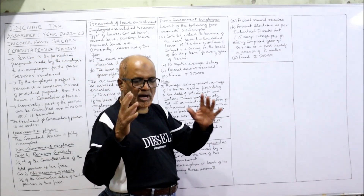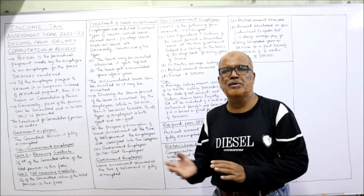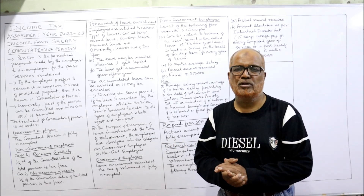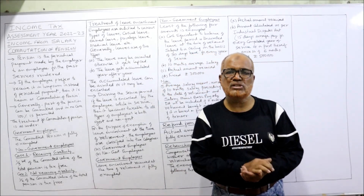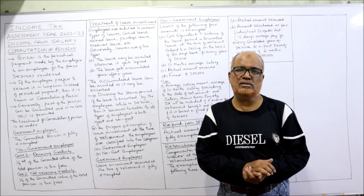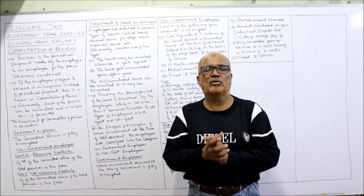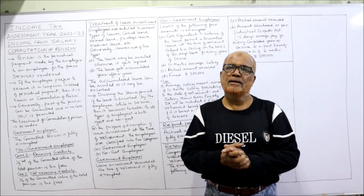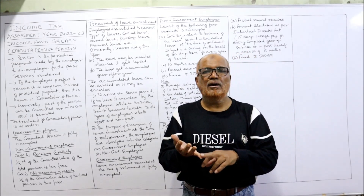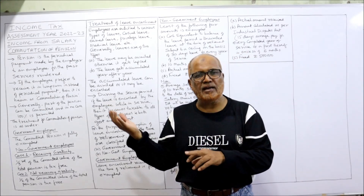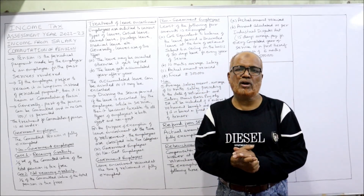In this video I have explained commuted pension, leave encashment, refund from SPF, and retrenchment compensation. This marks the end of the topic of retirement monetary benefits. Theory questions may be asked on these topics apart from numerical problems. In the next video I will start problems on gratuity, leave encashment, and commuted pension, and then proceed to other topics.